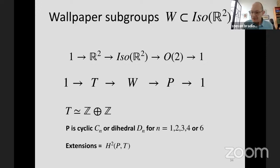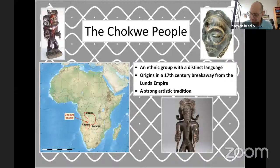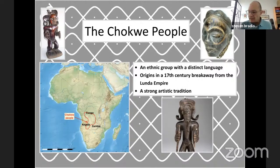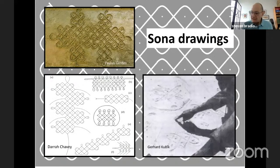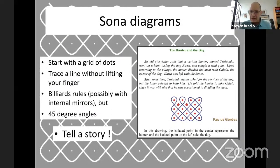In the last few minutes, I want to turn to a somewhat different example of the interaction between mathematics and culture — from the culture of the Chokwe people, one of the distinct language groups in central Africa. While they're known for a generally strong artistic tradition, the aspect I want to talk about has to do with a Chokwe tradition of sand drawings called sona — literally tracings in the sand. Here you see some examples shown either as photographs of actual sona or reproduced as line tracings.